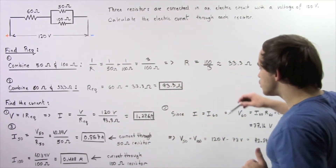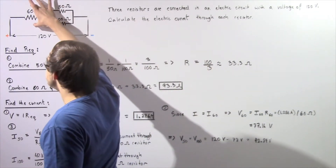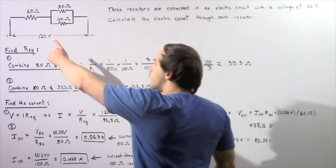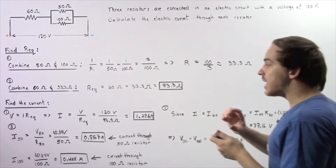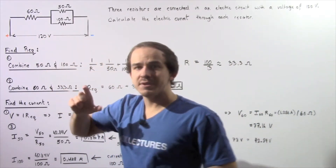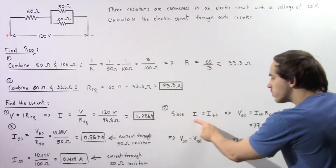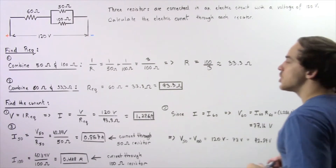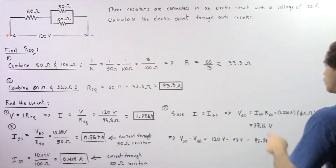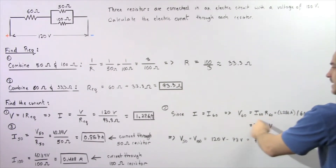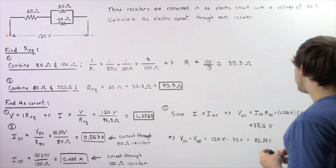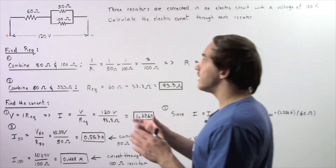Now we want to use the total electric current to calculate the voltage across the 60 ohm resistor, and then find the voltage across the two parallel resistors. To calculate the voltage across the 60 ohm resistor, we realize that the electric current through it is the same as the total current. So the voltage across the 60 ohm resistor equals I60 multiplied by R60, giving us 60 ohms times 1.286 amps, which equals 77.16 volts.